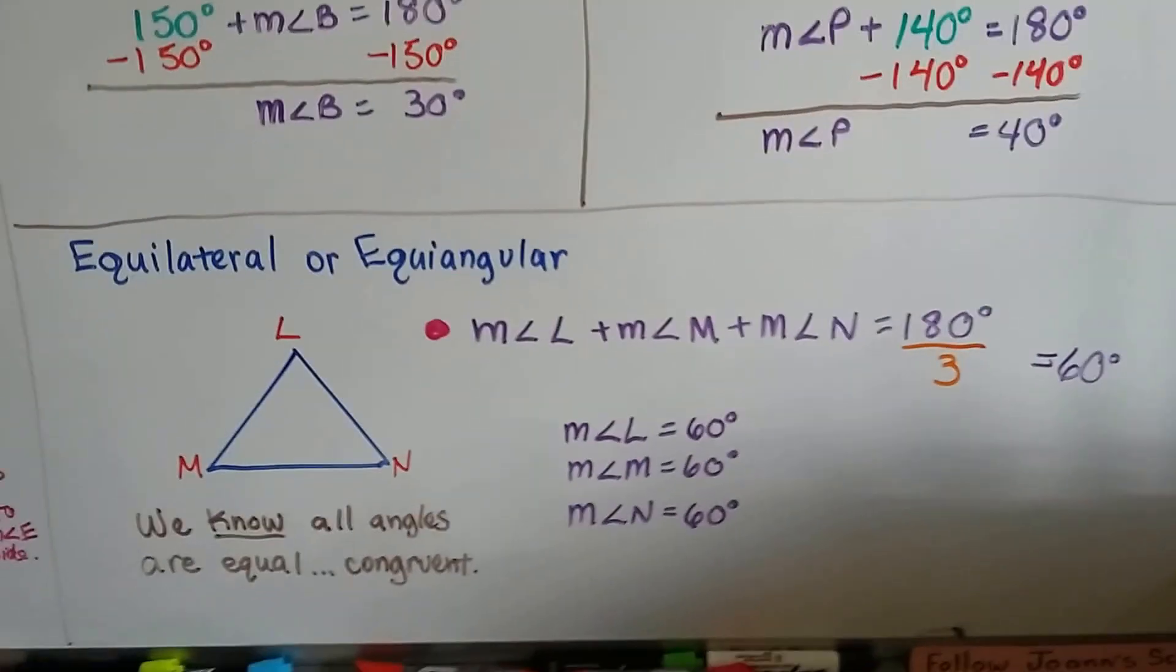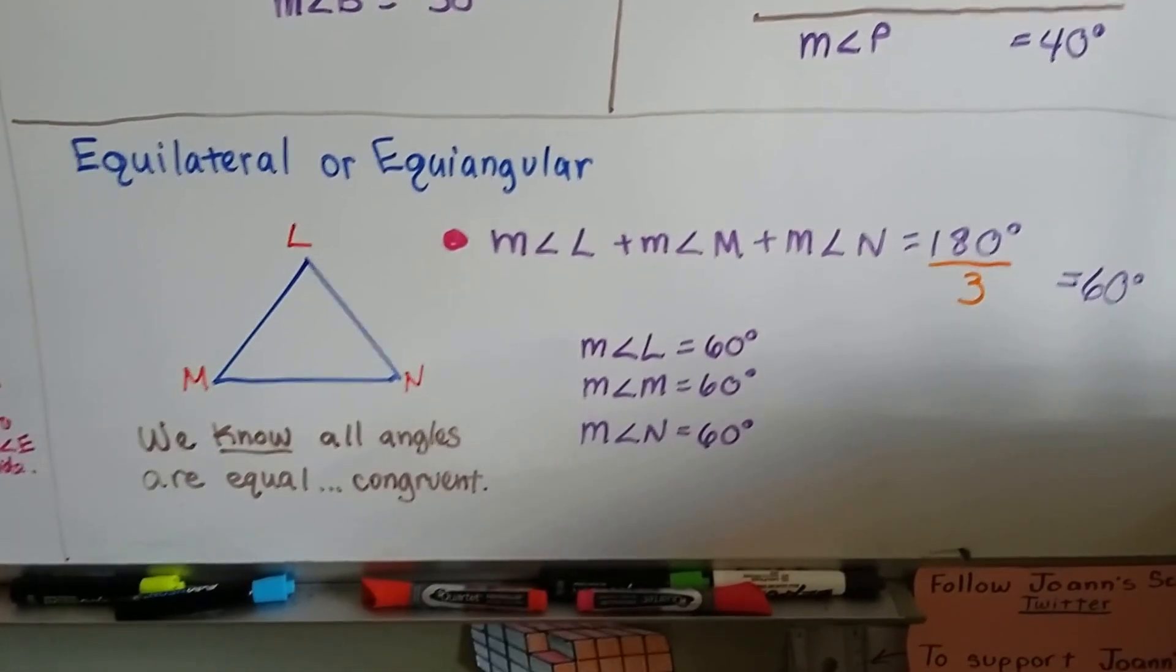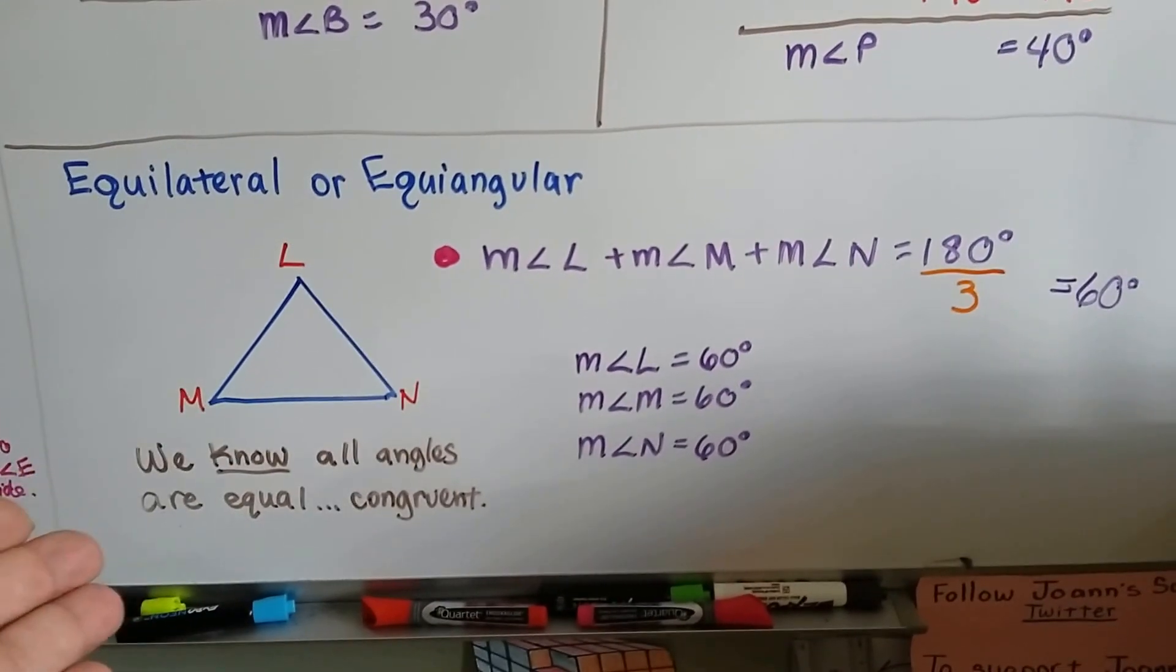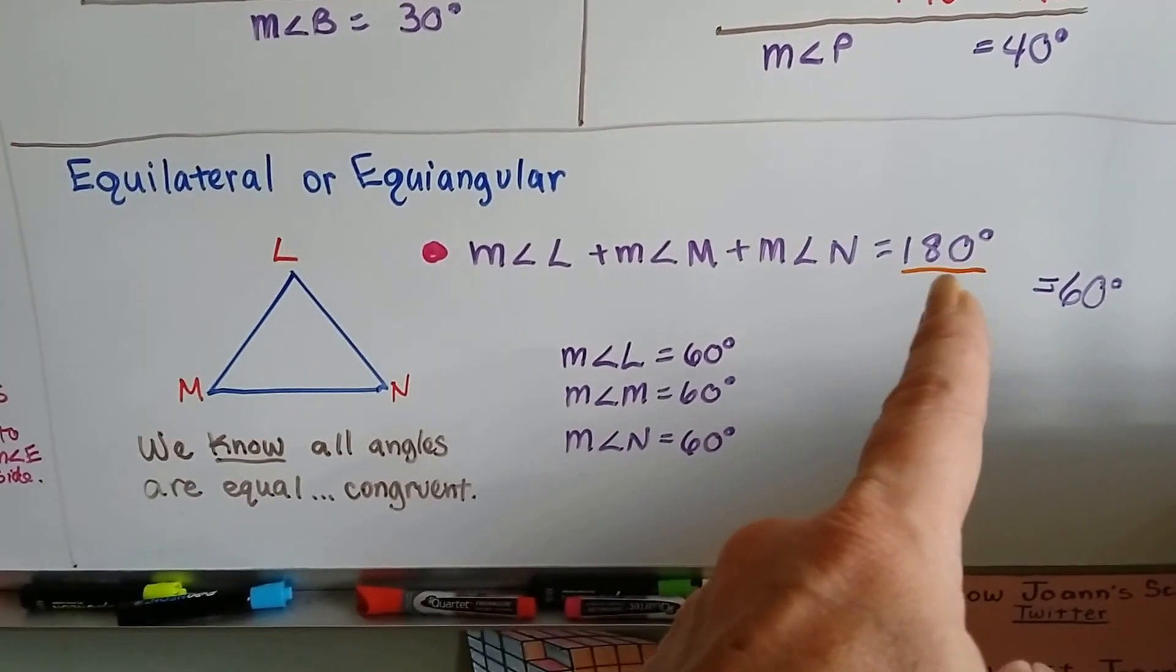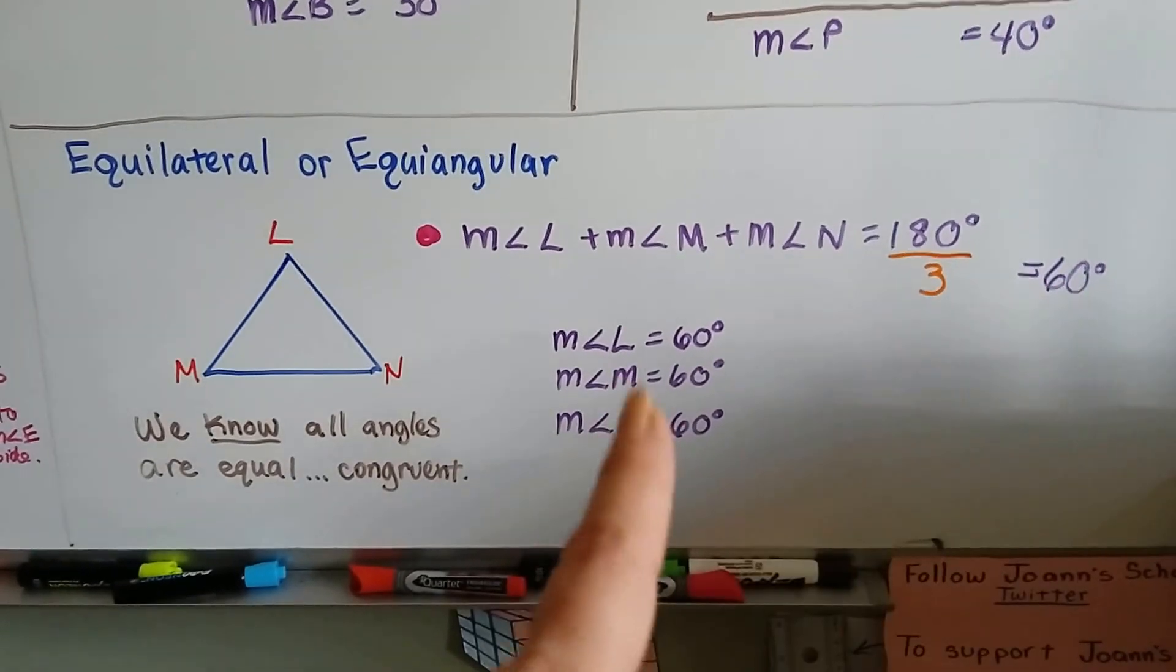Like I said in the beginning of the video, if we're dealing with an equilateral or equiangular triangle, like LMN, we know all the angles are equal, they're all congruent. So all we have to do is divide this 180 degrees by three, and we know they're 60 degrees each.